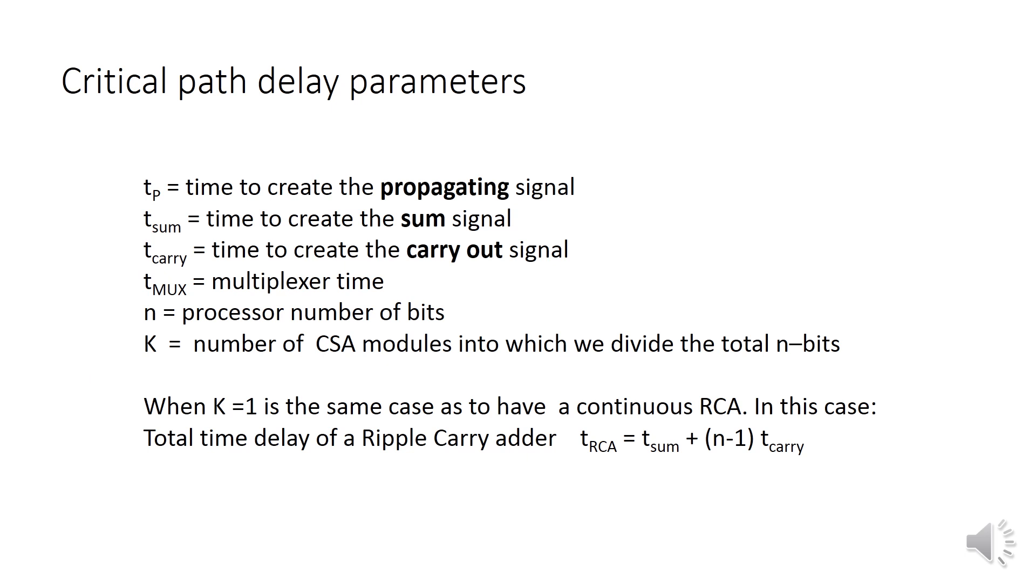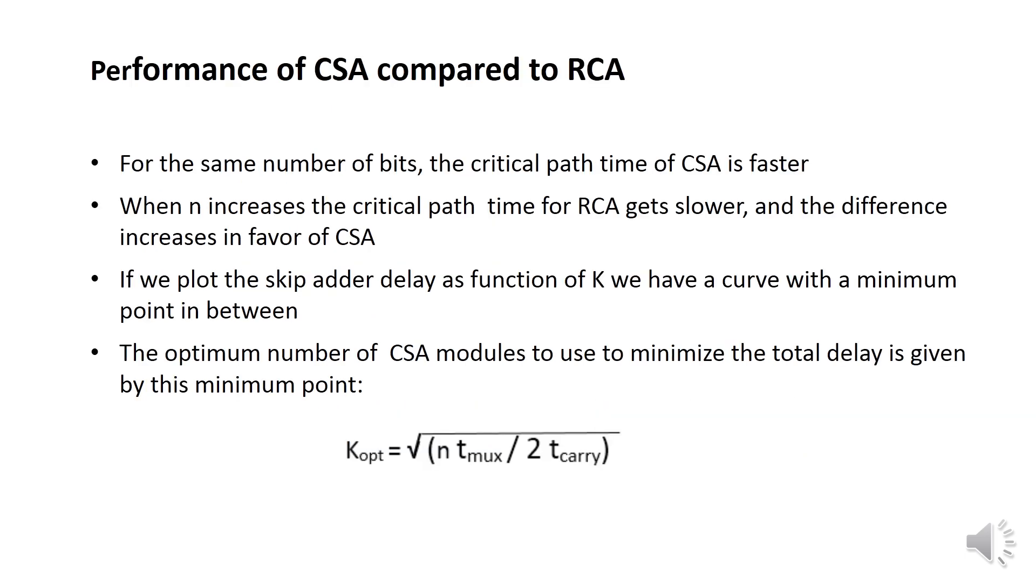Note that if in the formula we make k equal to 1, this means we have only one block of n full adders. So the main line is a continuous ripple carry adder and we obtain the expression of the critical path of a ripple carry adder already found in previous videos, which is this one.